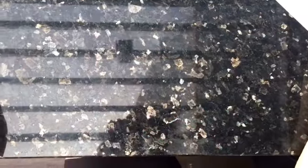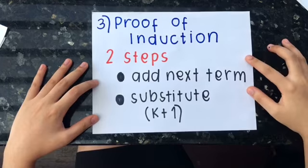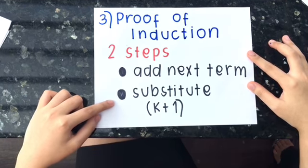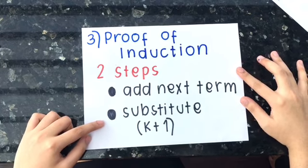Now that we have induction hypothesis, we now have to do the proof of induction, which is the third step. In proving the induction, we have to do two steps: add the next term and substitute k plus 1. And the answer for both equations should be equal to each other.